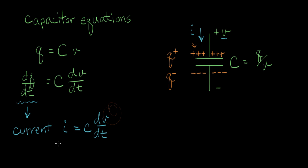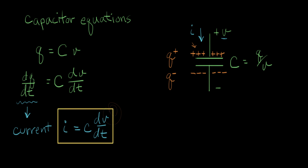This is an important equation — it's basically the IV relationship between current and voltage in a capacitor. What it tells us is that the current is proportional to the rate of change of voltage, with the proportionality constant C. Not proportional to the voltage itself, but to the rate of change of voltage.